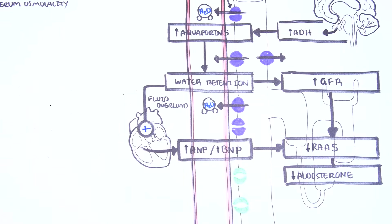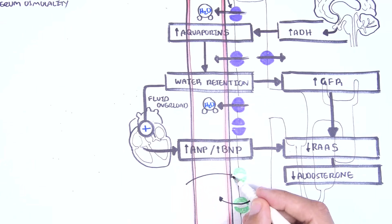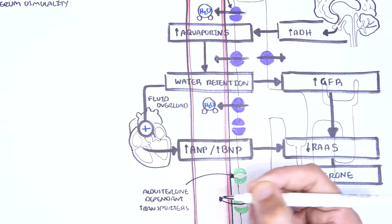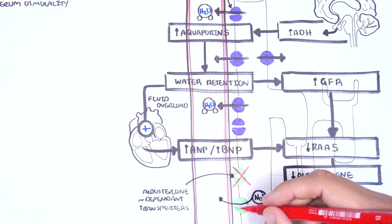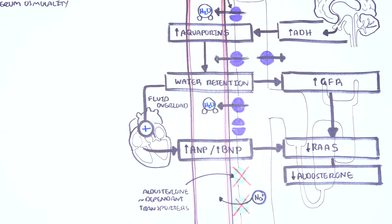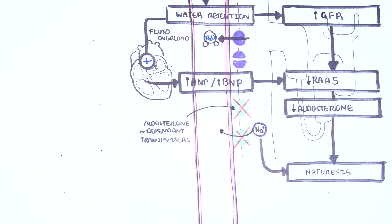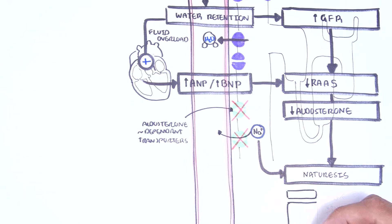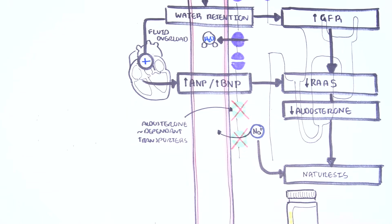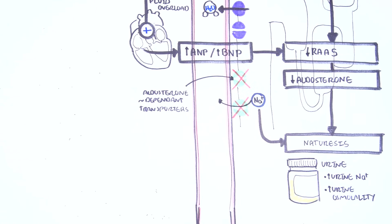When aldosterone is reduced, sodium is not reabsorbed through the aldosterone-dependent sodium channels in the kidneys. Because sodium is not reabsorbed, it will be excreted — this is called natriuresis. With SIADH, the urine sodium is high because aldosterone is not reabsorbing sodium, so you have sodium being excreted in urine.